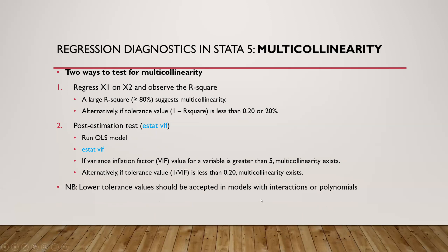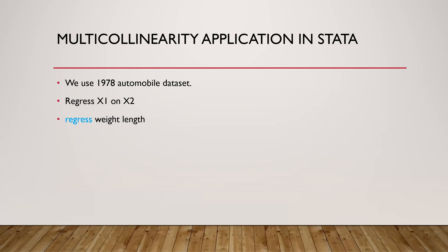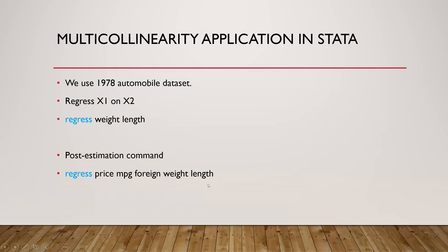However, if we have interaction models or polynomial models, then we should expect a lower tolerance value than 0.2. Now let's do an example using the automobile dataset. We will regress x1 on x2 — here x1 is weight and x2 is length. The second approach is to use post-estimation where we run the full model for price, including MPG and foreign, which is our original model. Then we type 'estat vif' and we will see the VIF values for each of the x variables. Let's get to Stata and do it right away.